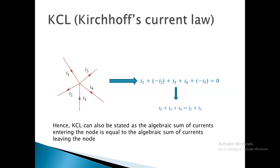The algebraic sum of current entering the node is equal to zero — entering currents are positive and leaving currents are negative. Equivalently, the sum of current entering equals the sum of current leaving, where both sides are taken as positive. One equation moves the leaving currents to the other side.